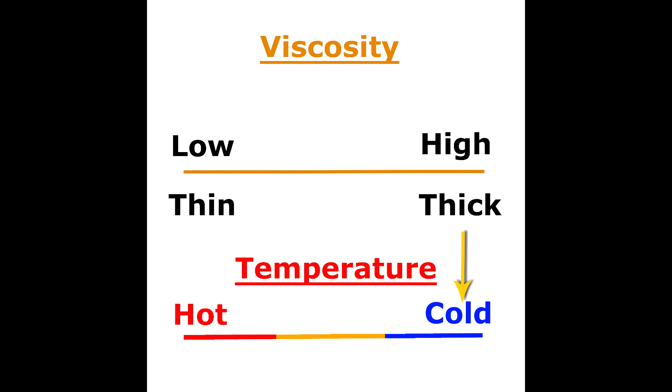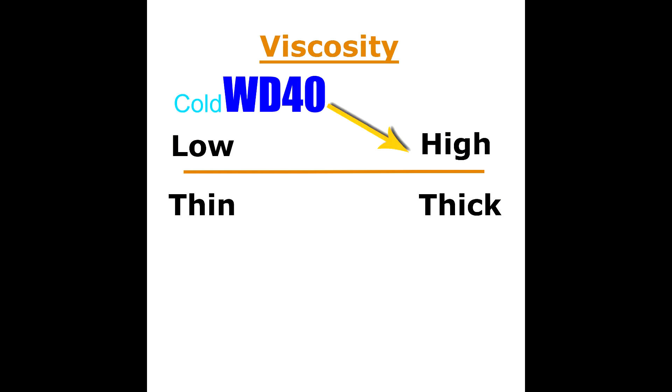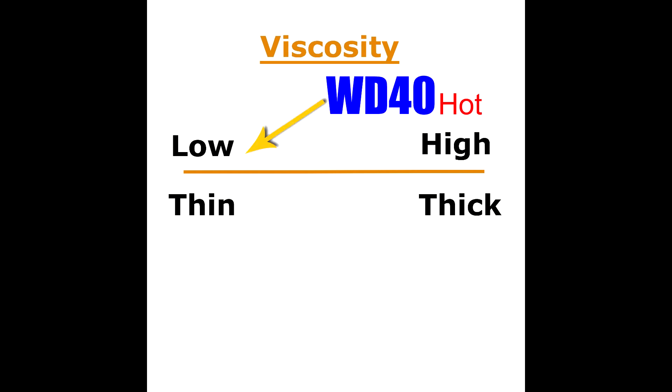Generally, the colder a given oil is, the thicker it is, producing the highest viscosity that particular oil can have. On the other end of the scale, the hotter the oil, the thinner it will become, producing the lowest viscosity. Although WD-40 is still thin when it's cold, it's still thicker in its cold state compared to when it's hot.